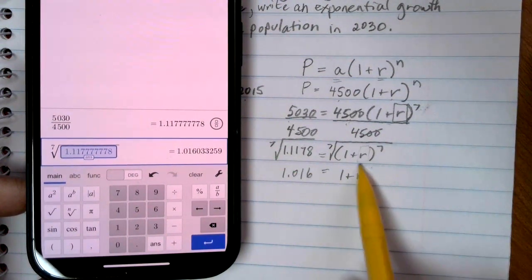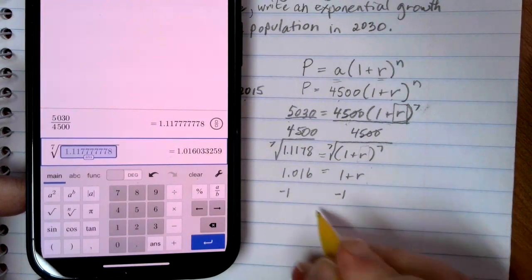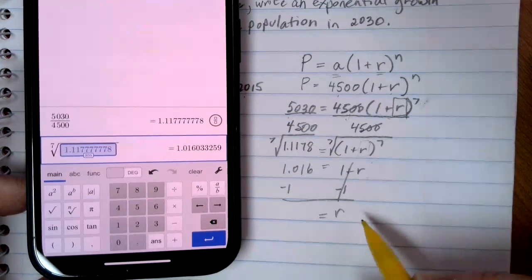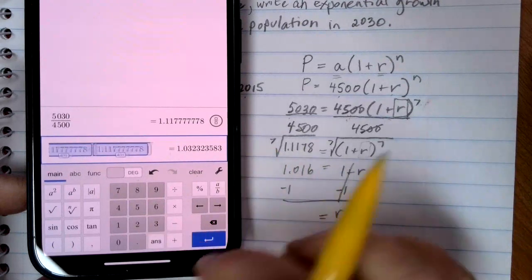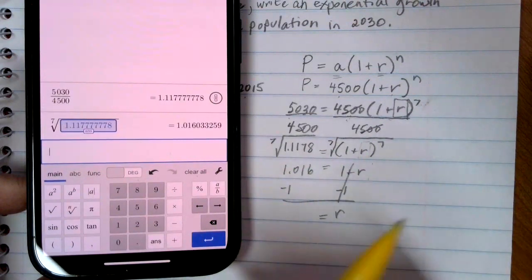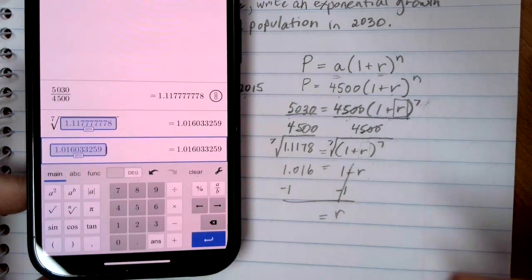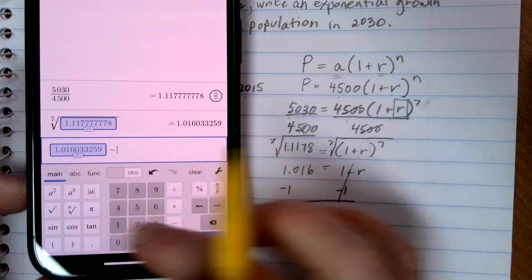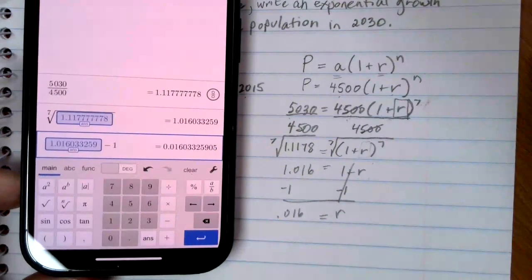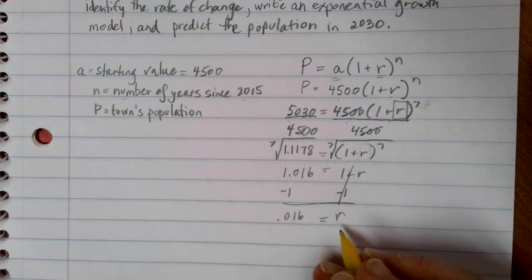Now the R is almost by itself. All I have to do is get rid of the 1 that's being added, so I'm going to subtract 1 from each side. That leaves the R by itself on the right-hand side. On the left-hand side, I just need to take that last answer, the 1.01603, and subtract 1 from there. And I get 0.01603. So I've been able to find the R value.